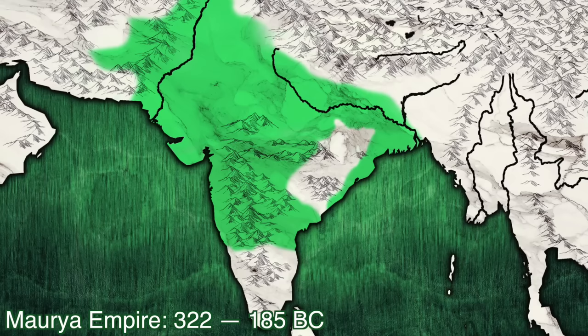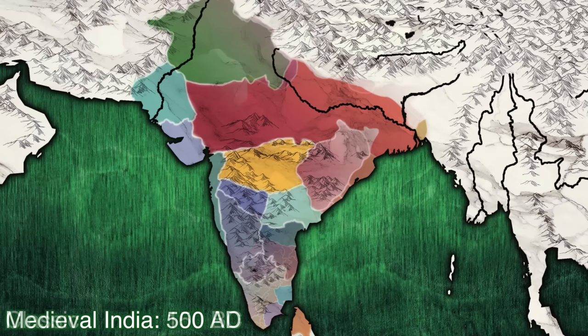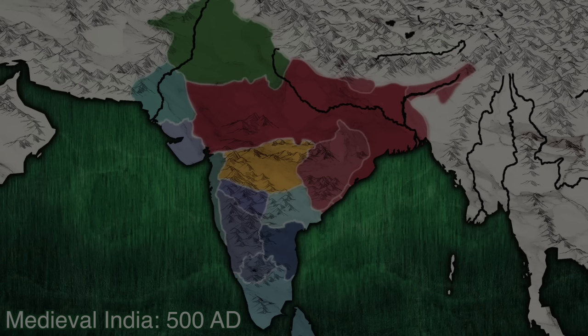When last we left the history of India, Ashoka's Mauryan Empire had just shattered into a dozen tiny pieces. Look, we hate to see it, but sometimes history be like that. And unfortunately for my love of cartography, what follows are the classical and medieval periods where hundreds, if not thousands, of small local kingdoms change their borders so rapidly that the map looks like 1700 years of television static. Whew, here we go.